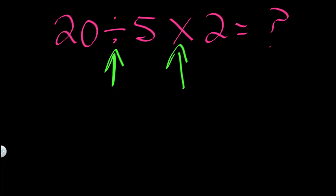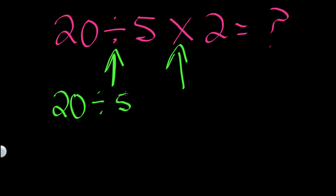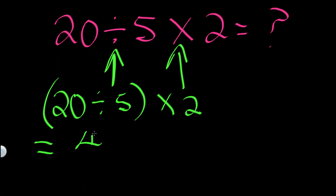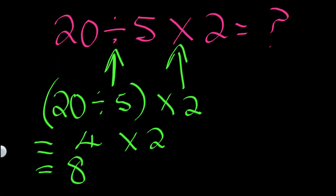Every student of mathematics who understands the rules of order of operations should get the same answer. For 20 divided by 5 times 2: we do 20 divided by 5 first, which gives 4, then multiply by 2 to get 8. The answer is 8. The rule: if you have multiplication and division, because they are on the same level, you work from left to right — the operation that comes first from left to right is the one you apply.